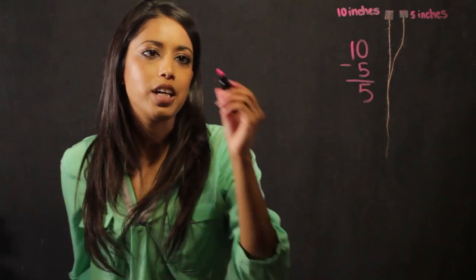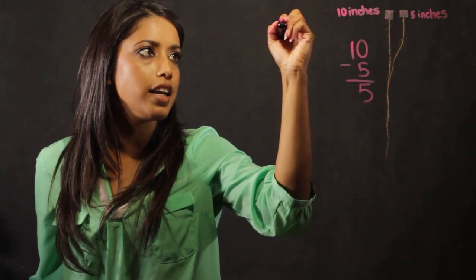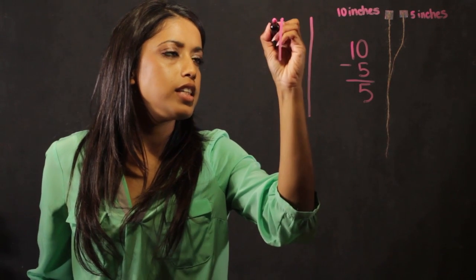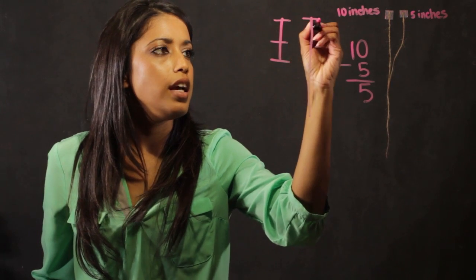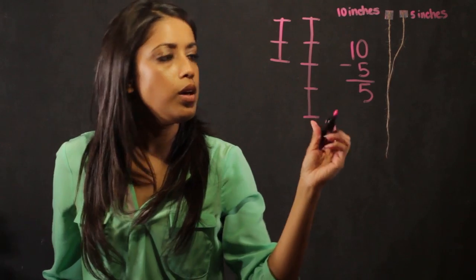Another way that we can do this is just by simply looking at number lines. If I have a line here and a line here, and let's just say that this line is 2 units long, and this line is 4 units long.